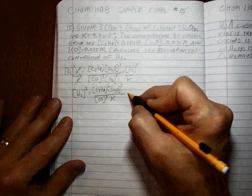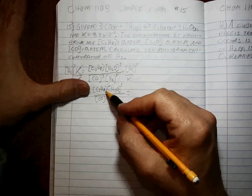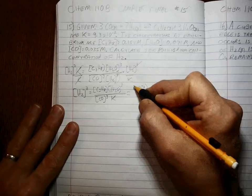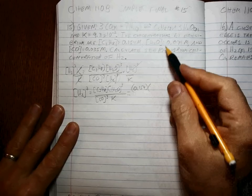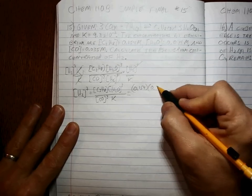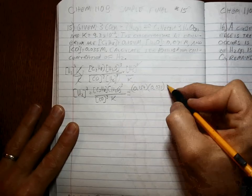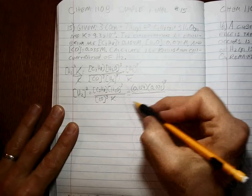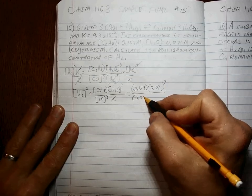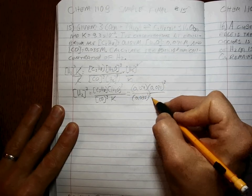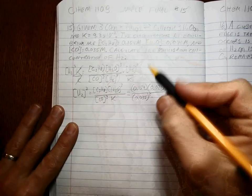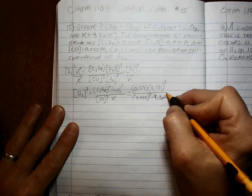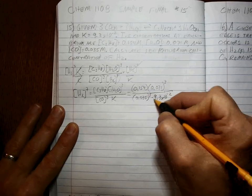divided by K. Okay, we know what C3H8 is, it's 0.154. We know what H2O is, it's 0.074, but we have to take it to the third power. We know what CO is, 0.035, take it to the cube power. We know what K is, 9.3 times 10 to the minus 2.